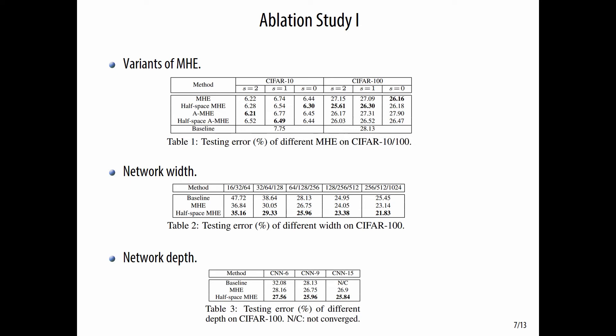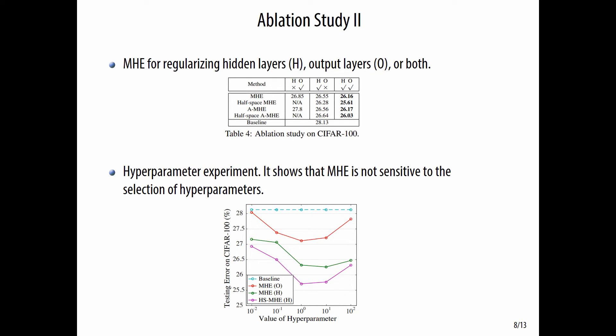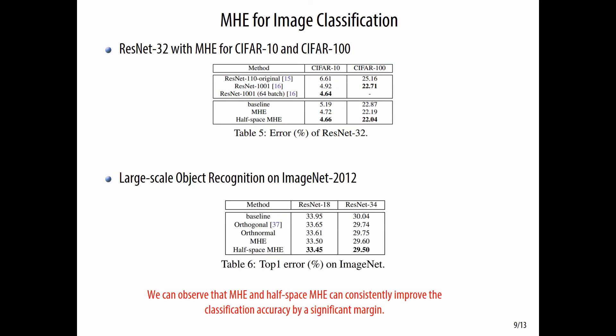We first show some ablation studies on different MHE variants, different network widths and depths. MHE performs consistently better than baselines. We also perform ablation studies on MHE for hidden layers and output layers, and hyperparameter experiments are also conducted. From experiments on CIFAR and ImageNet, we observe that MHE and half-space MHE can consistently improve classification accuracy.